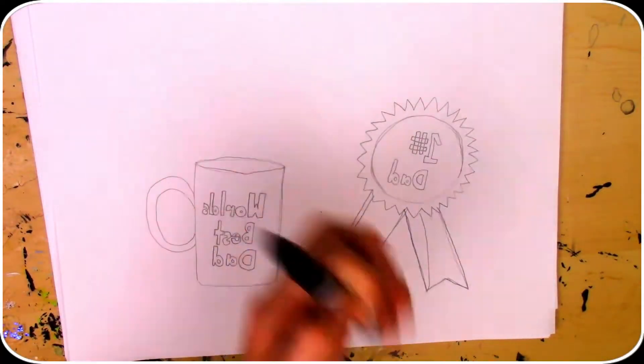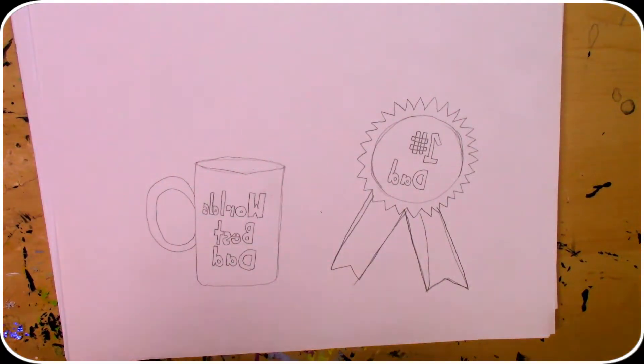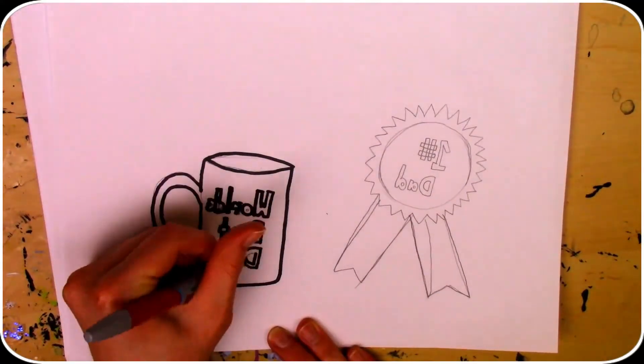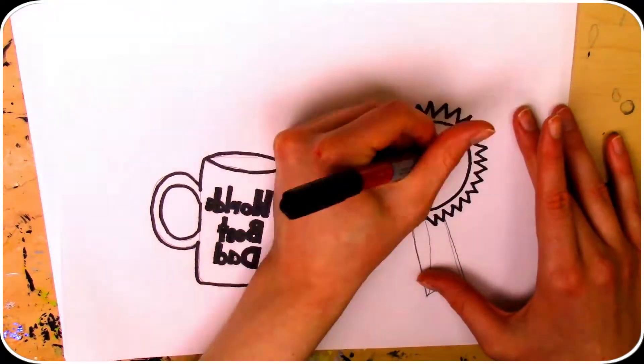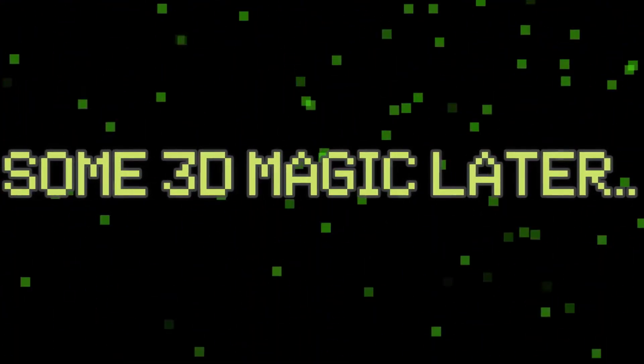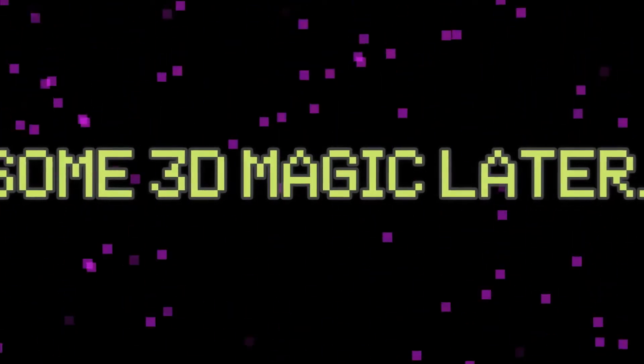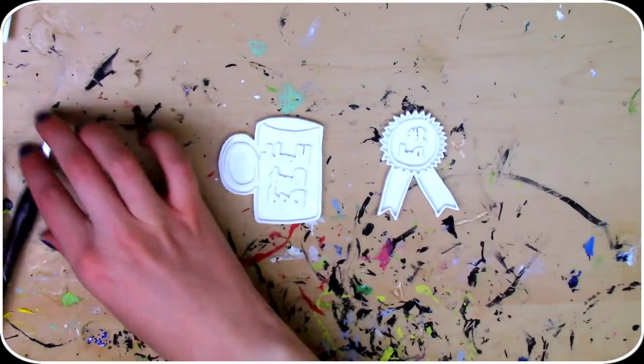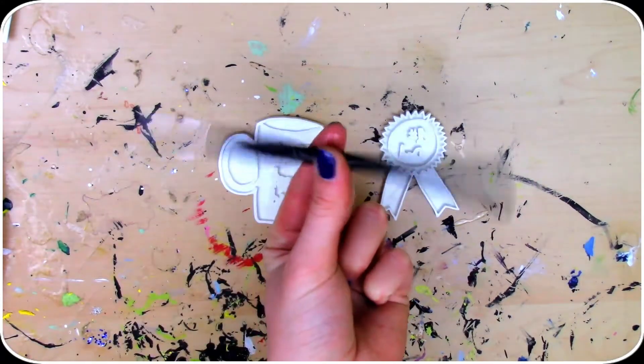Next, I'm just going to outline these pictures and then we can get them 3D printed. Here are the 3D versions of these pictures. Now all I have to do is grab some regular acrylic paint and paint them in.